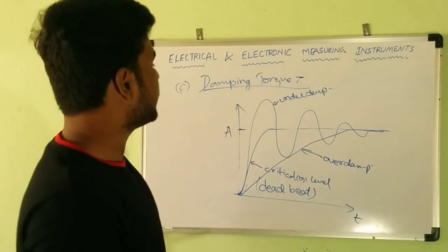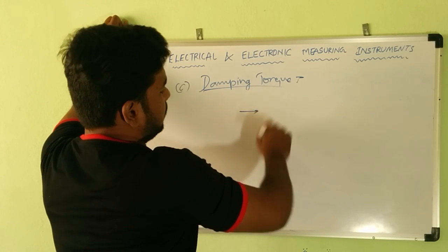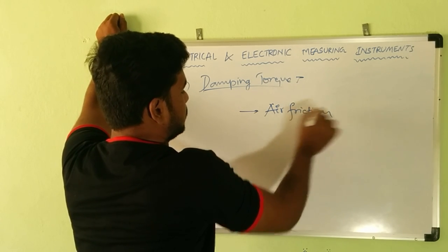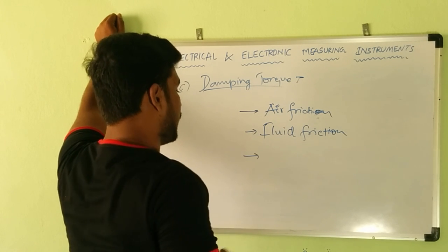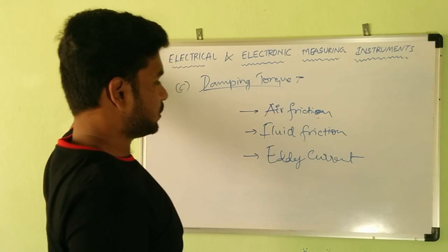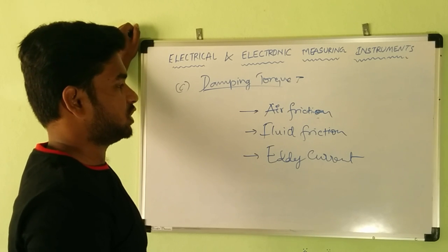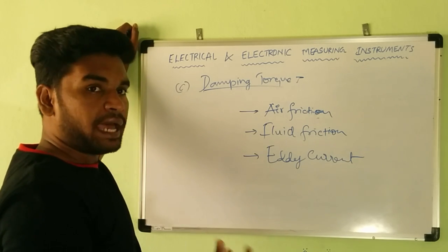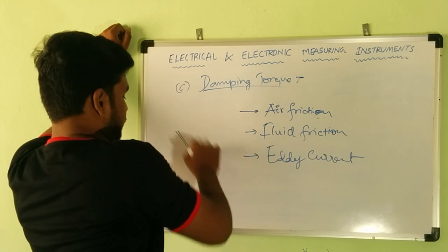Now let us see the different techniques by which we can obtain damping, and which method is best. Popularly we have different techniques like air friction damping. In air friction damping, we utilize the friction of air in a closed chamber. It means we don't allow the pointer to move as easily as it wants — we provide a lot of inertia. Let us see a pictorial representation of this.